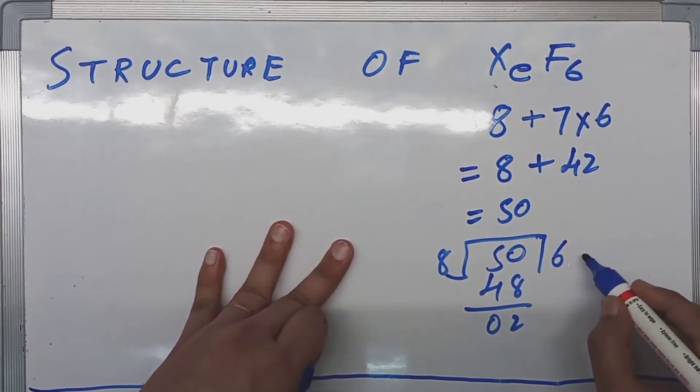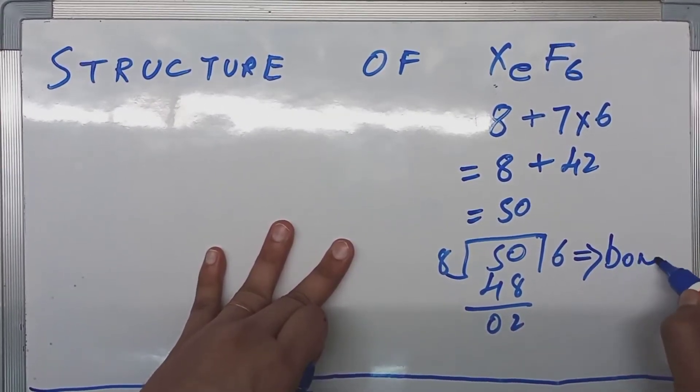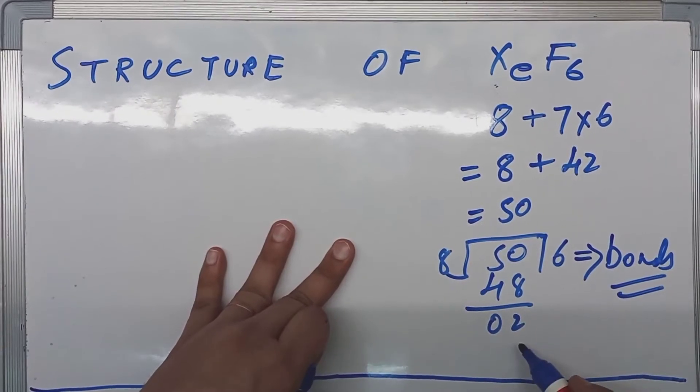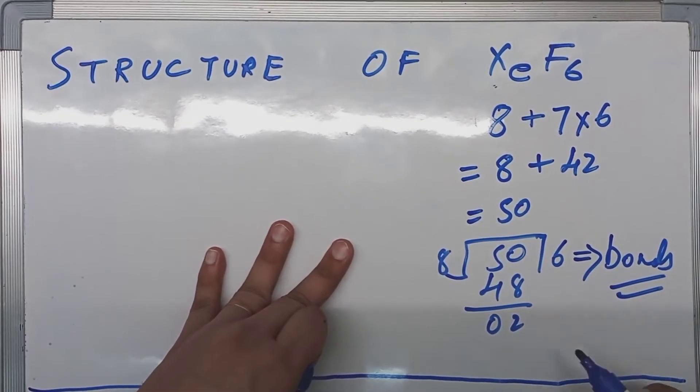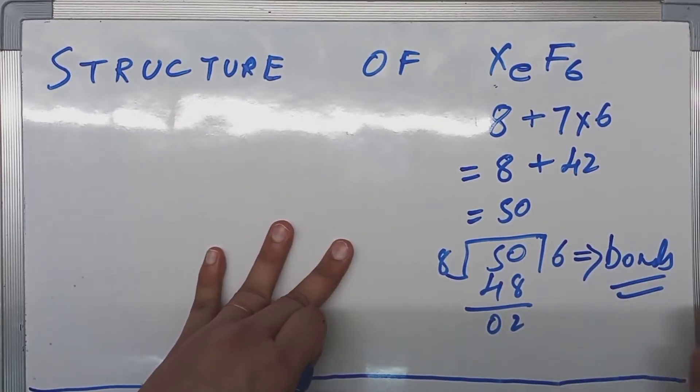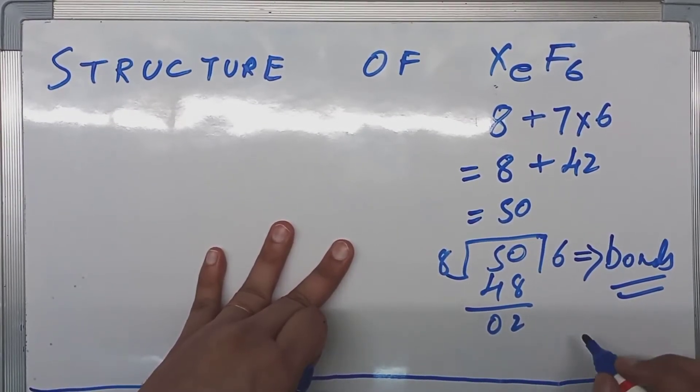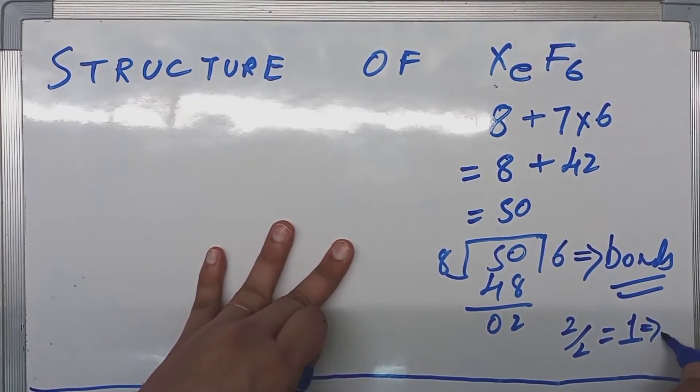This 6, the quotient part, represents the number of bonds. And the remainder part, 2, is divided by again 2. If this would have been 4, then we would have been dividing it by 2, which comes out as 2. But here we have got 2, so 2 by 2 is equal to 1, and this 1 represents lone pairs.